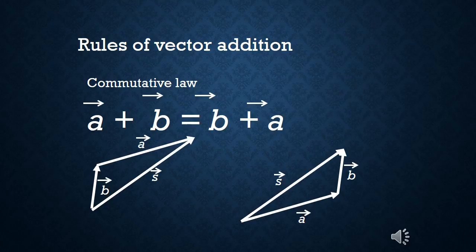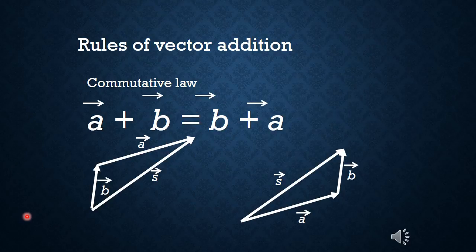Continuing to think about vector addition: in regular addition, 5 plus 2 is the same as 2 plus 5 — that's the commutative law — and that works for vector addition as well. If I add A and then B I get vector sum S. If I add B and then A, I also get S. The two vector S's shown here aren't in the same place, but that doesn't matter — they don't need to be in the same place to be the same vector.